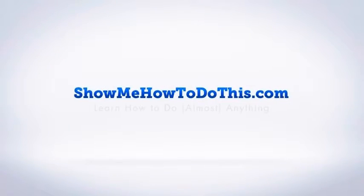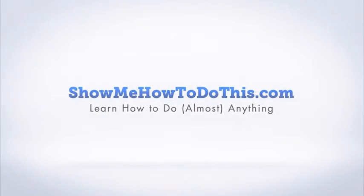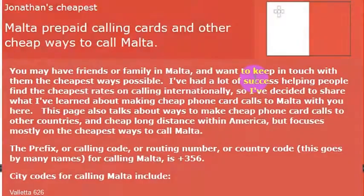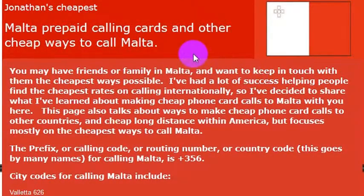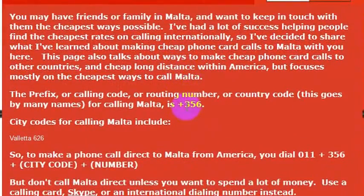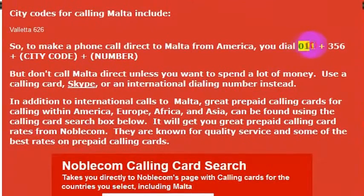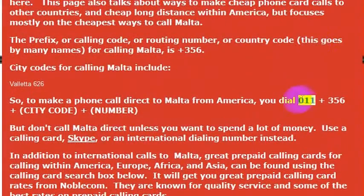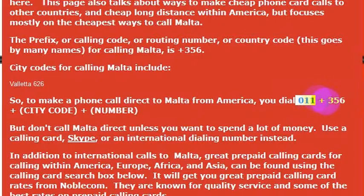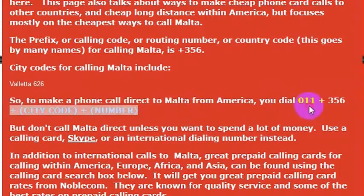If you were calling Malta, it is pretty straightforward to make that phone call. All you need to do is know the country code to call Malta. The country code is 356. If you're calling from the United States, you also need to dial 011 to get the outside line. So you would dial 011 — that gives you the international line — then 356, which is the country code for Malta, and then you dial the phone number that you want to call.